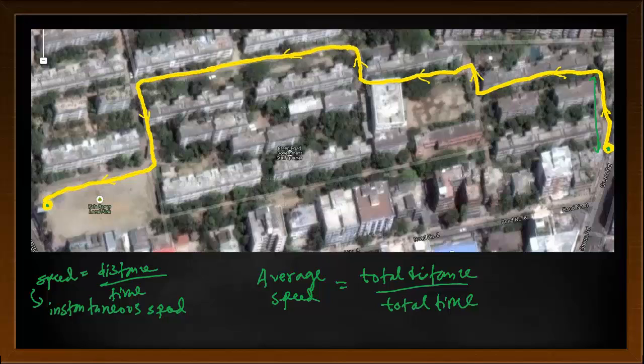So if it took approximately 30 minutes, meaning 0.5 hours to travel, and the distance is 2 kilometers, then the average speed would be total distance divided by total time: 2 kilometers divided by 0.5, which is 4 kilometers per hour. But instantaneous speed, as you saw in the pedometer, keeps changing.